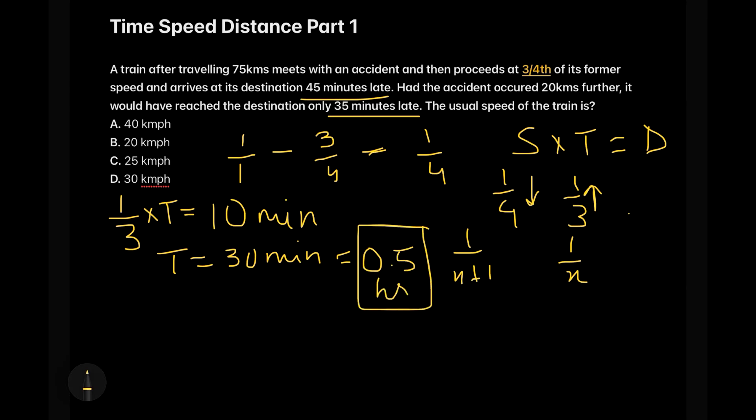So this is the time with us. Now in the formula of speed into time is equals to distance, we already have the time with us. Now it's time for us to find out the distance so that the usual speed of the train can be calculated.